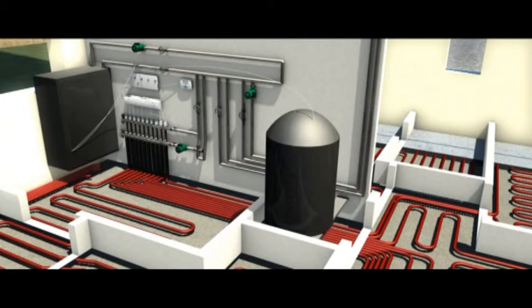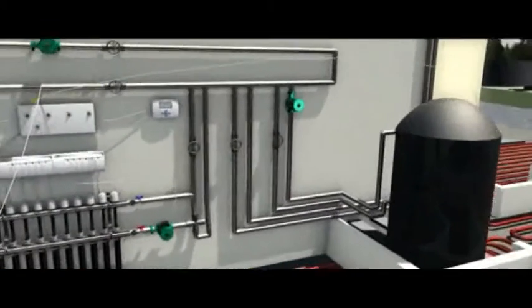Finally, the third channel will be used to control the domestic hot water. Once the cylinder thermostat calls for heat, the heating control panel will direct hot water to the cylinder through its takeoffs.